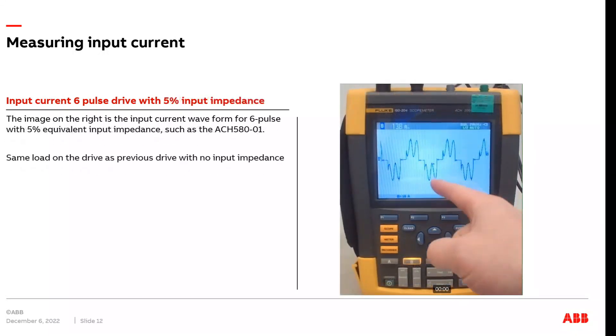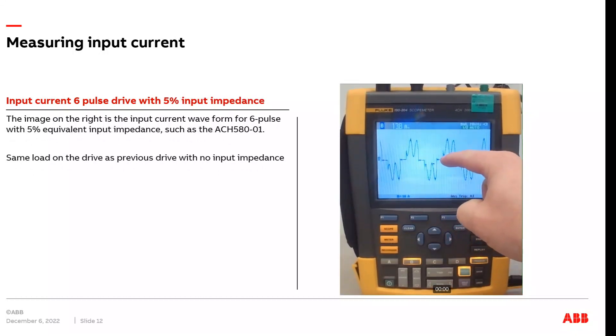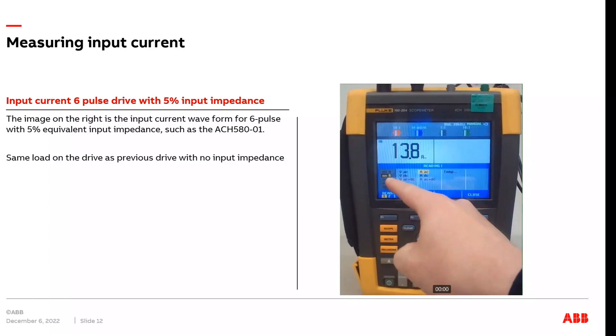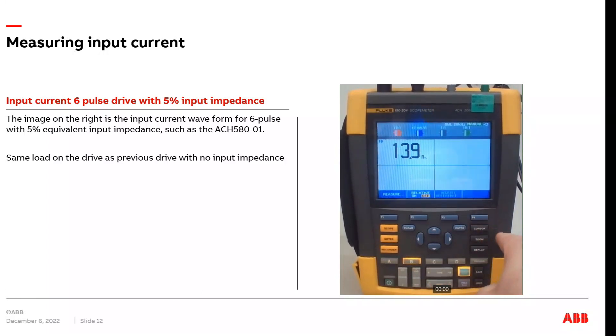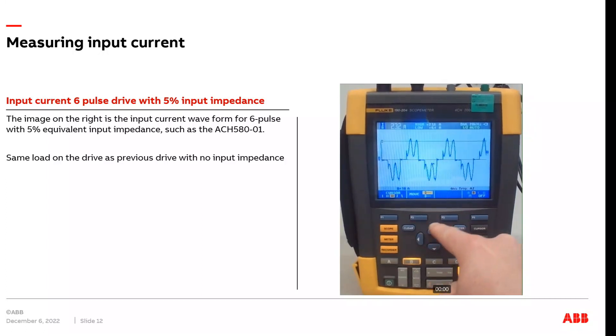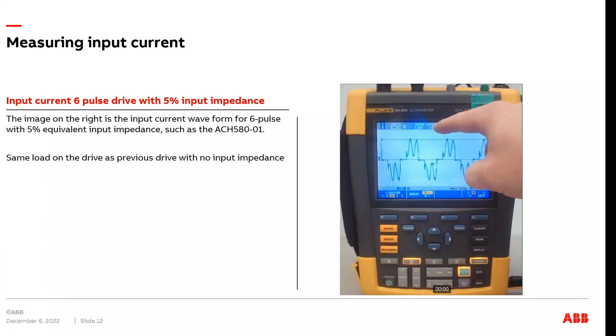I now want to show you what the input current looks like on a VFD with input impedance standard. We're going to use the 5801 drive, which has 5% equivalent input impedance built into the drive in the form of dual DC link chokes. We're first going to look at the RMS current, which is 13.8 amps. Now, we're going to adjust the cursors and look at the peak current. Peak current here, you can see, is around 24, 25 amps, which is what it should be around compared to the 6-pulse drive with no input impedance that we previously looked at, which had around 46 amps. So, this drive has much less peak current, which is expected.